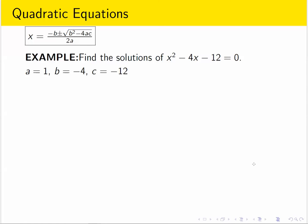So here's the formula again for reference. And let's use it to find the solutions of this quadratic equation. x squared minus 4x minus 12 equals 0. The first thing you want to do is identify the coefficients.